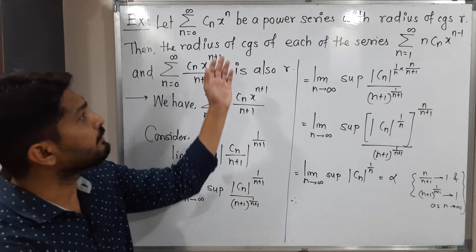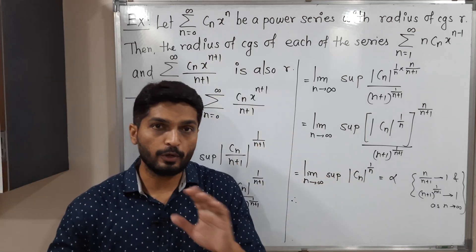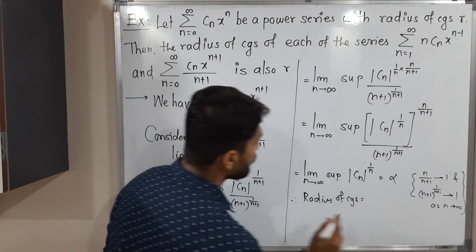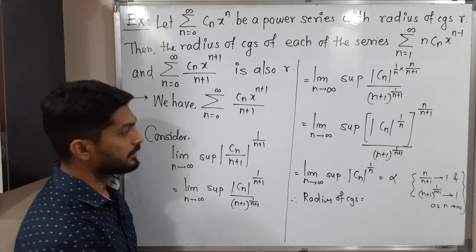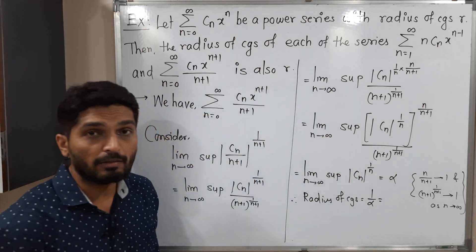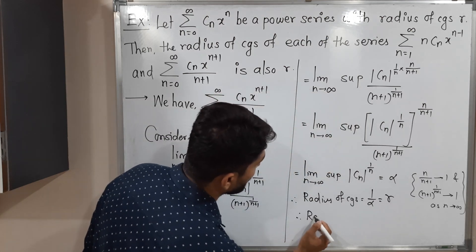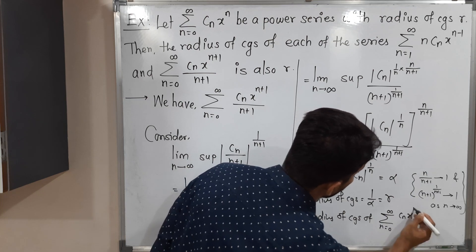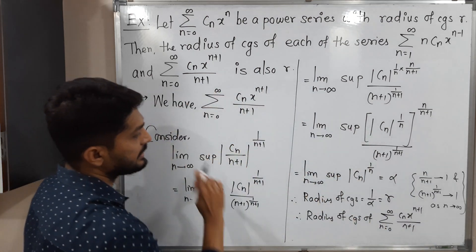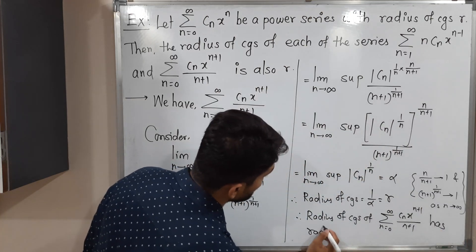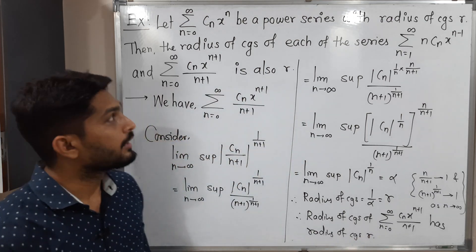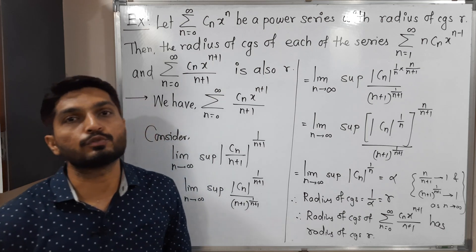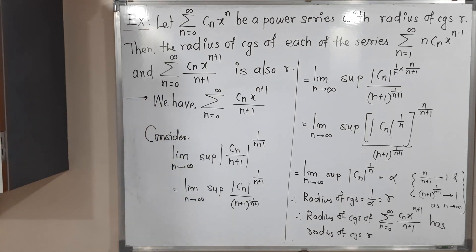So therefore alpha is the same value as given in the original information. The radius of convergence is the reciprocal of this limit, which is 1 by alpha, and we know that 1 by alpha equals r. So the radius of convergence of the power series summation n running from 0 to infinity of Cn x raised to n plus 1 upon n plus 1 is r. We have proved that if the original power series has radius of convergence r, then the series obtained by integrating it has the same radius of convergence r. Thank you, see you, bye.